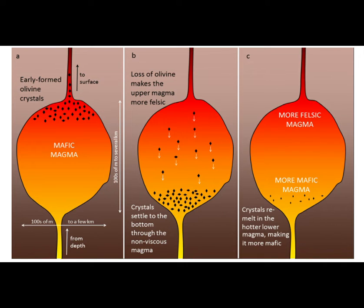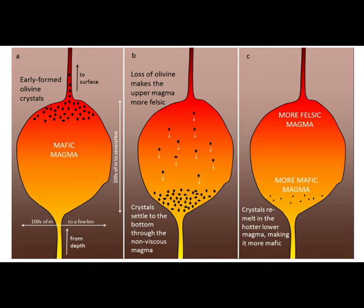Now, if after the formation of the first crystal we removed those crystals from the melt, would the bulk composition remain the same? The answer is no — because we are taking some elements outside the system, the composition of the system as a whole would change. This is fractional crystallization. The basic difference is that in equilibrium crystallization, the bulk composition of the system remains the same, whereas in fractional crystallization, the bulk composition changes.